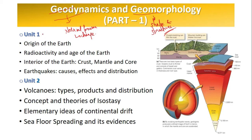Let's begin with unit one. In unit one we'll be learning about the origin of the earth — how the earth originated and evolved. We can see the structure of the inner earth here. This is the first topic: the origin of the earth. Then we'll learn about radioactivity and the age of the earth.